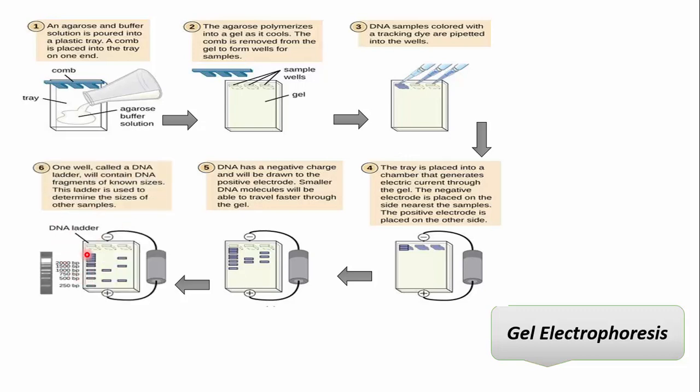Once the DNA has migrated far enough across the gel, we switch off the electric current. The gel is removed from the electrophoresis tank. To visualize the DNA, the gel is stained with a fluorescent dye that binds to the DNA. Then we place the gel in an ultraviolet transilluminator, which shows the stained DNA as bright bands.